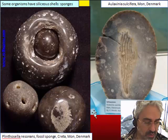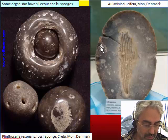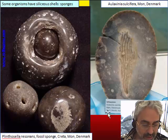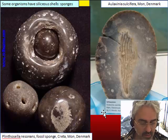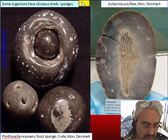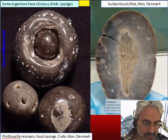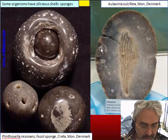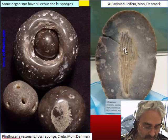There are some organisms that are basically made of silica, like some sponges that have a silica skeleton. So this obviously forms fossils in silica. Sponges are often found in the center of flint nodules.